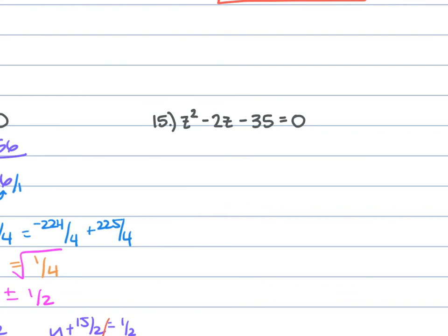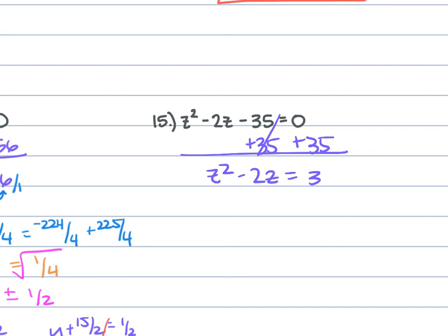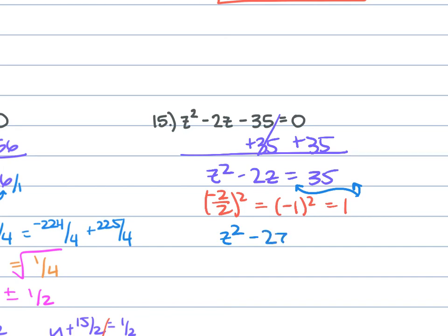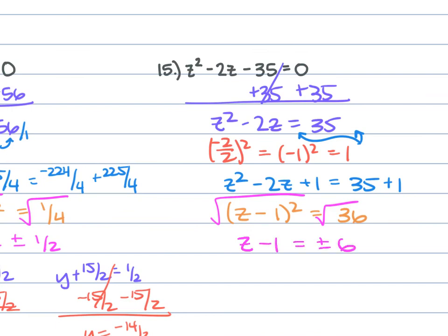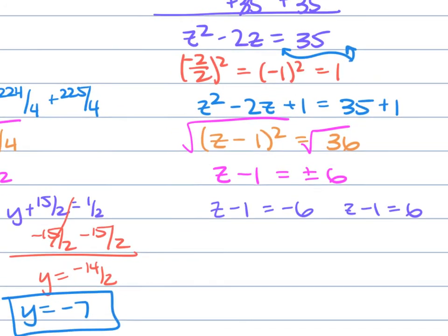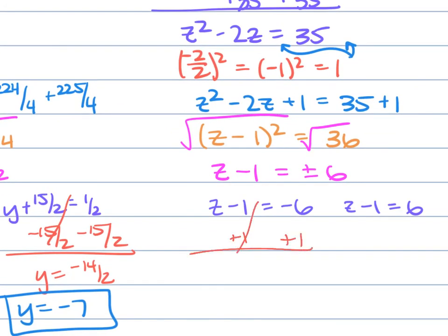For problem 15, we have z squared minus 2z minus 35 equals 0. Add 35 to both sides: z squared minus 2z equals 35. b is negative 2, so negative 2 over 2 squared is negative 1 squared, which is 1. Add 1 to both sides: z squared minus 2z plus 1 equals 35 plus 1. Factor: z minus 1 squared equals 36. Take the square root: z minus 1 equals plus or minus 6. Form two equations: z minus 1 equals negative 6 gives z equals negative 5; z minus 1 equals positive 6 gives z equals 7.